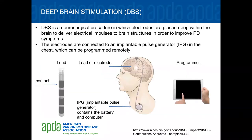Another approach to treating PD is through surgery. Deep brain stimulation, or DBS, is a surgical procedure in which a wire is placed deep within the brain, then tunneled under the skin and attached to an implantable pulse generator in the chest. This IPG can be controlled to deliver electricity to the deep parts of the brain that regulate the circuitry not working properly in PD. DBS can be helpful for those who do not get consistent improvement from their medication doses.